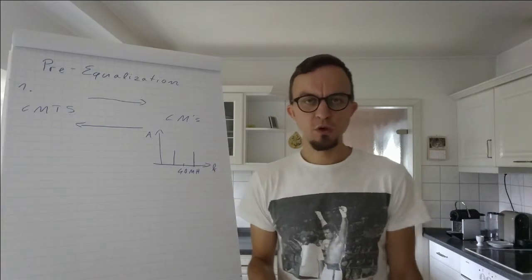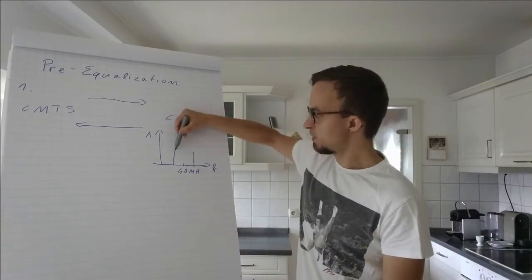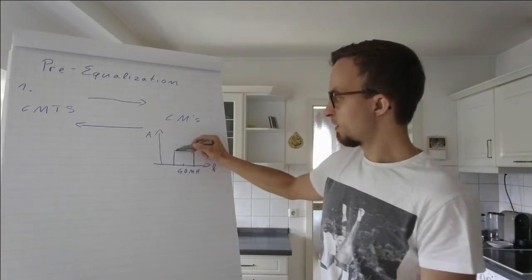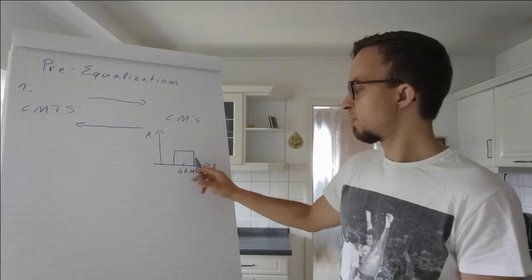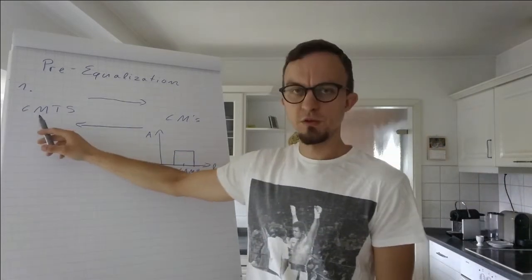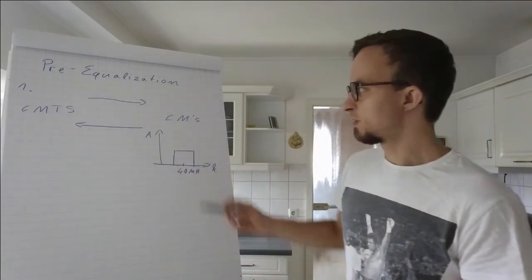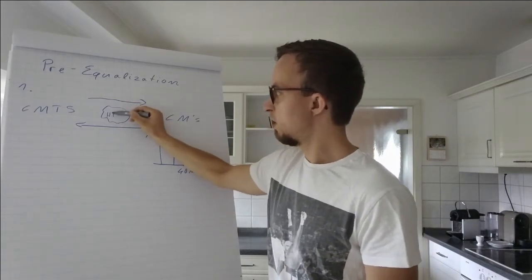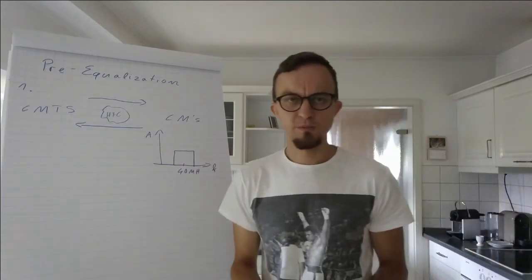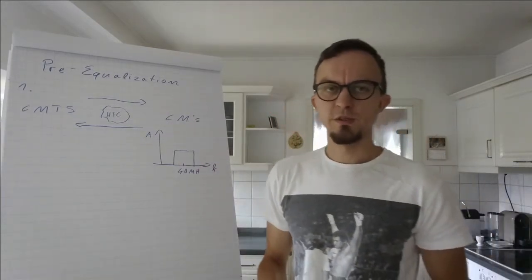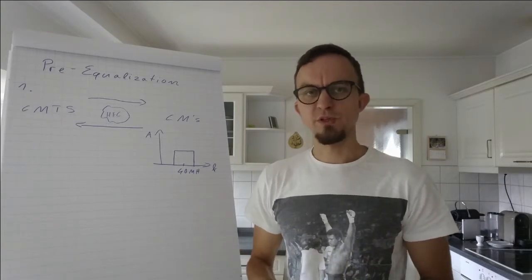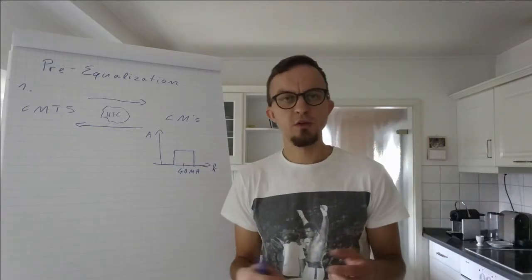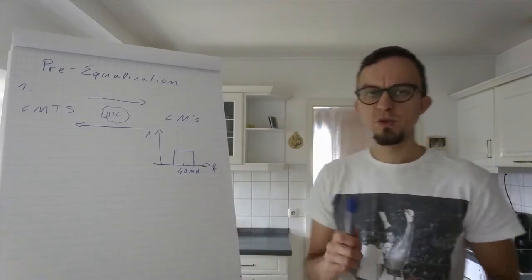In a perfect world, this would be a rectangle in the frequency space which the cable modem transmits to the CMTS. Inside the HFC network, there could be many impacts on the signal, like equalization because of different lengths, or elements that destroy the signal.